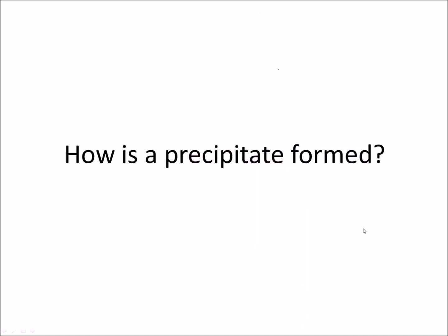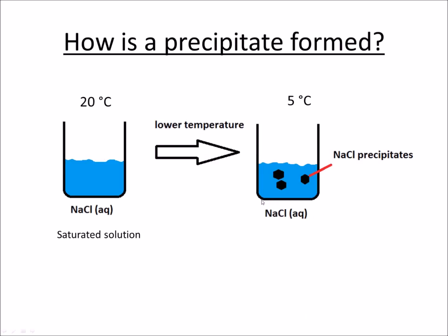Now there are a couple of ways of forming a precipitate. So let's look at this example over here. Let's assume we have a saturated solution of sodium chloride. Now if we lower the temperature of this solution, we lower the solubility of sodium chloride, and therefore the extra sodium chloride precipitates out of the solution.